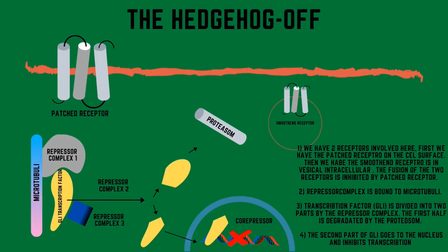First of all, we have the signal turned off. We have two receptors involved here. The first one is the patched receptor and the second one is the smoothened receptor, which is in a vesicle inside the cell. Normally these two receptors would fuse, but this fusion is inhibited by the patched receptor, which needs to be activated first. It is not activated — there is no ligand binding — so these two receptors cannot fuse.